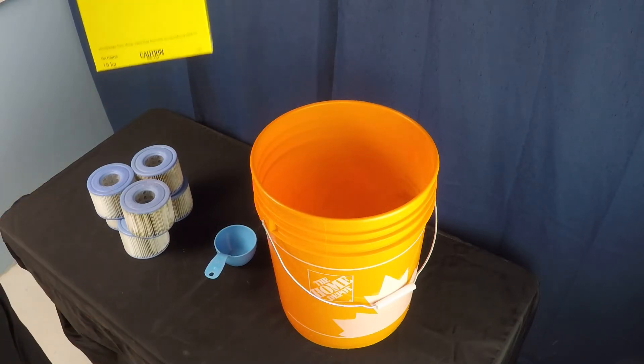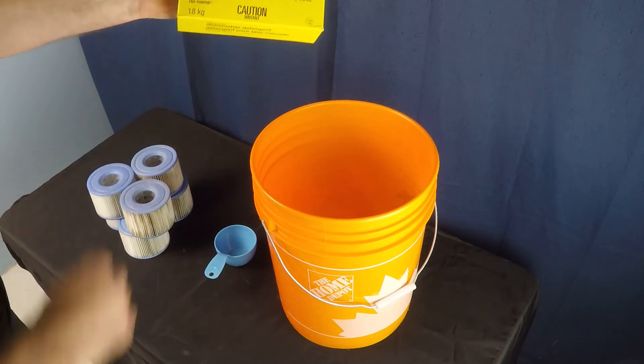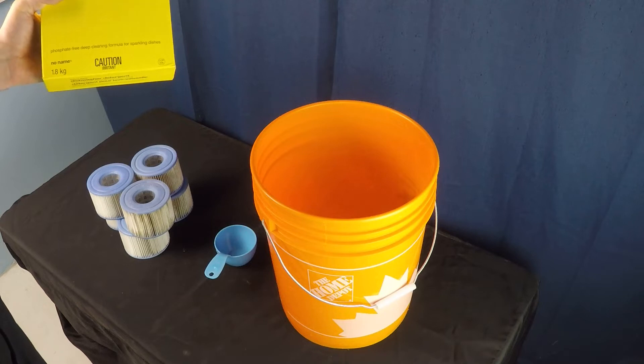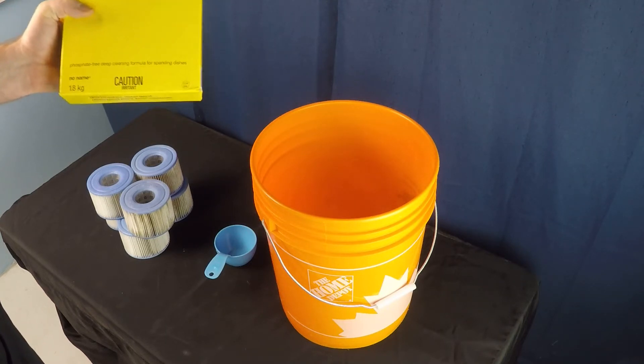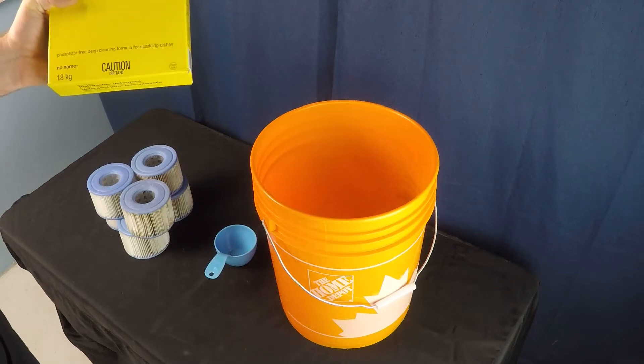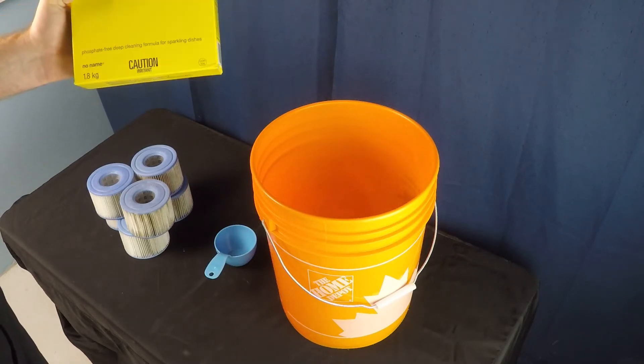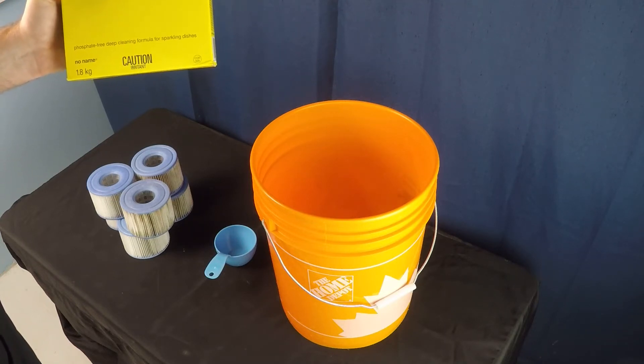Most importantly, it says right down here on the bottom: phosphate free. That's the most important thing that you're looking for when you're looking for a cheap, economy bulk product that you can use for cleaning your hot tub filters all the time. So I just look for the lowest price granular dishwasher detergent I can find. I make sure that it's phosphate free and then I'm good to go.